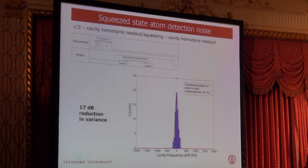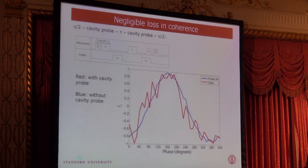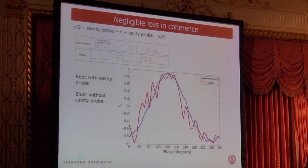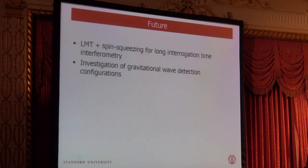I haven't demonstrated squeezing yet without also showing that coherence persists. So for the same data sequence, after the π/2 and squeezing probe pulse, we follow with an echo π pulse, a probe pulse to echo out inhomogeneities due to AC Stark shift, and a final π/2. The result shown in red with the squeezing beam on and blue without shows essentially no loss of contrast, even though we demonstrated 17 dB below shot noise on the previous slide. We're quite excited because this means we can put this state prep in the front end of our free-space interferometers and potentially realize a substantial gain in short-term sensitivity. The future goal is to get LMT plus spin squeezing all working together in that tower.